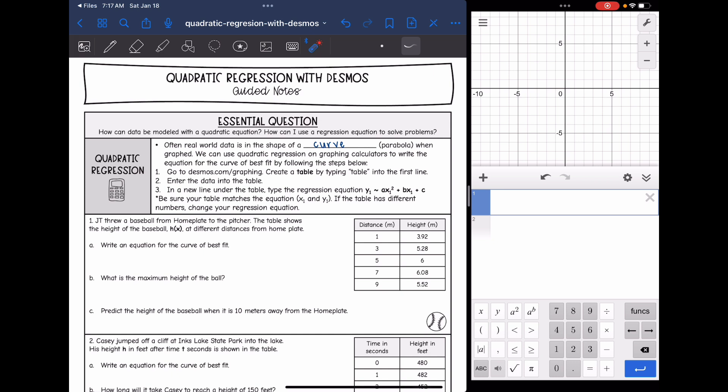So often real world data is in the shape of a curve or a parabola when it's graphed. We can use quadratic regression on graphing calculators to write the equation for the curve of best fit by following these steps below. These steps are specifically for Desmos.